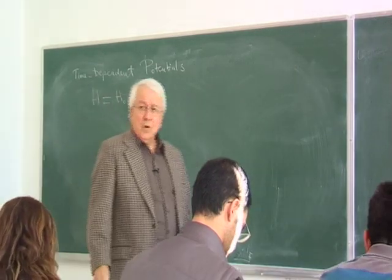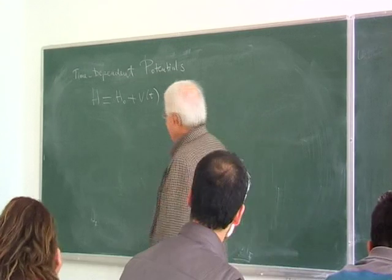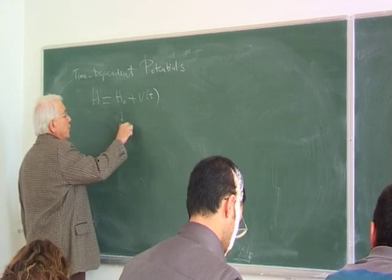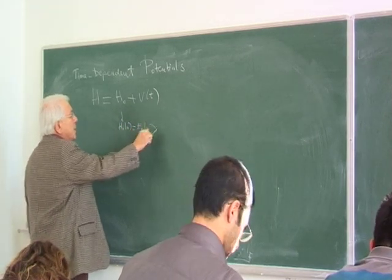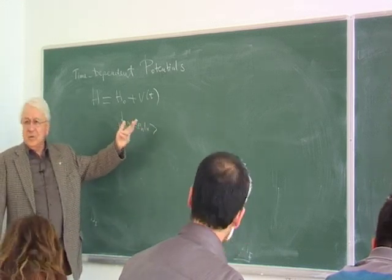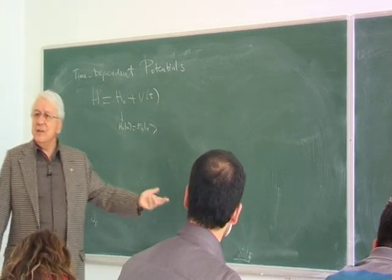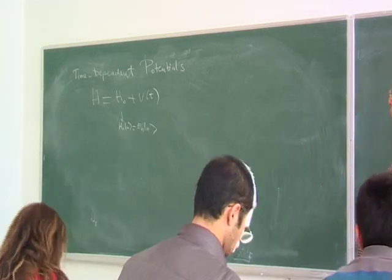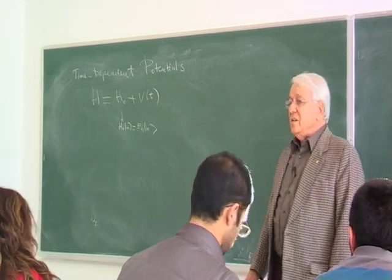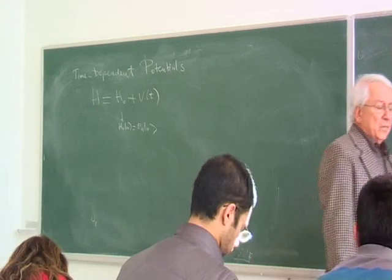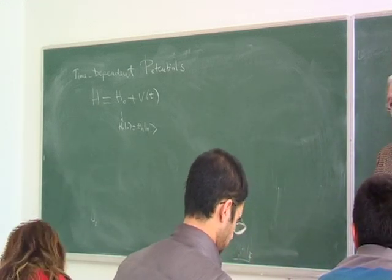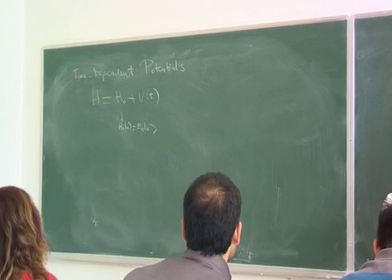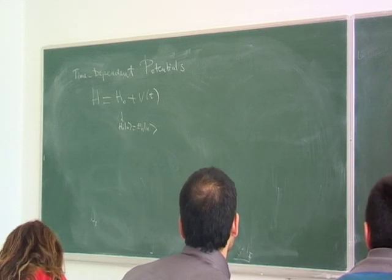There is a known, time-independent part H0 whose eigenvalue problem is known. We define it through this equation. Notice that I don't put zeros on E_n or |n⟩, because that's the only time-independent part — there is no need for complicating the notation further. So these are the energy eigenvalue problems of the time-independent part. And this V(t) is turned on at a given time, and we would like to investigate the effect of this V(t) on the spectrum of the original H0.